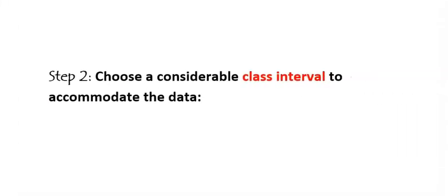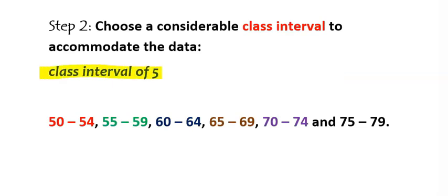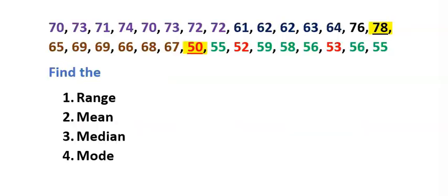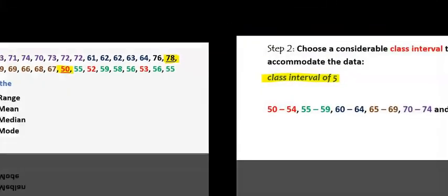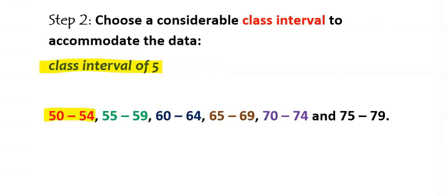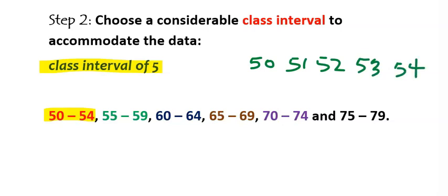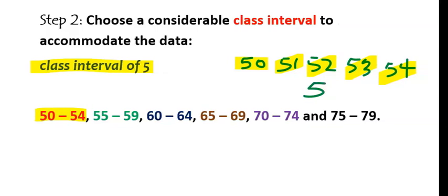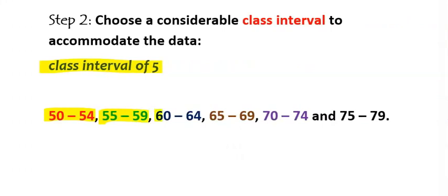Step number two: choose a suitable class interval to accommodate the data. Here we choose a class interval of five, considering the lowest and the highest number. Between 50 and 57, we use a class interval of five. The class intervals are: 50–54, 55–59, 60–64, 65–69, 70–74, and 75–79.